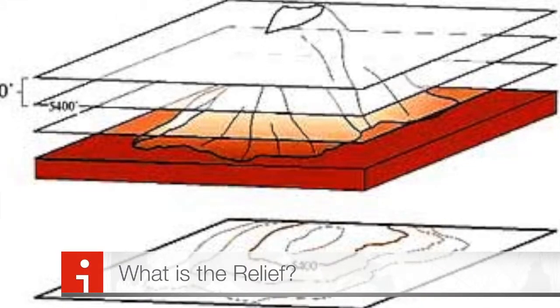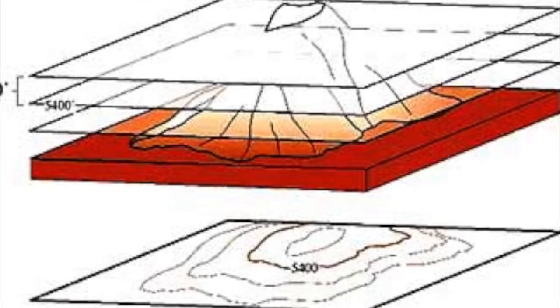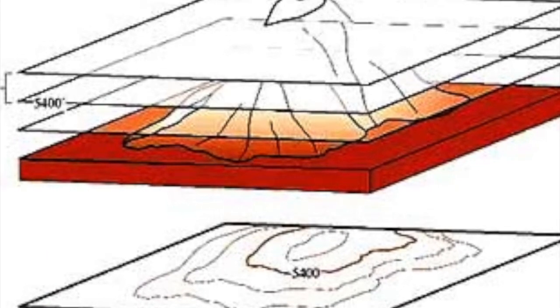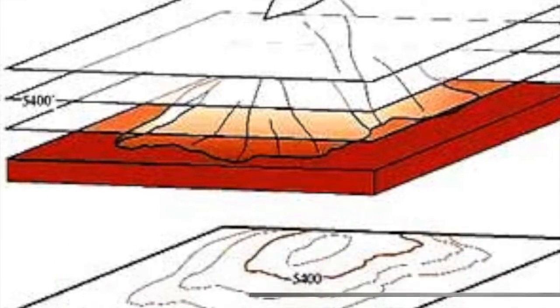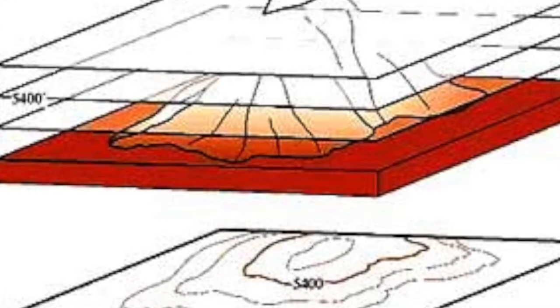What is the relief? The relief is the variations in height of the land. What is the gradient? The gradient is a measure of the degrees of the slope. It can be written as a ratio, a fraction, in words, or in degrees.